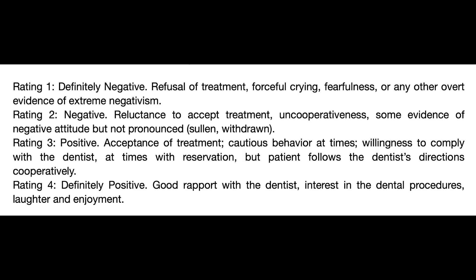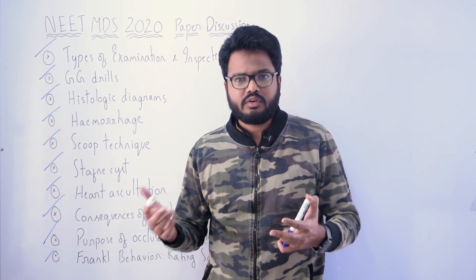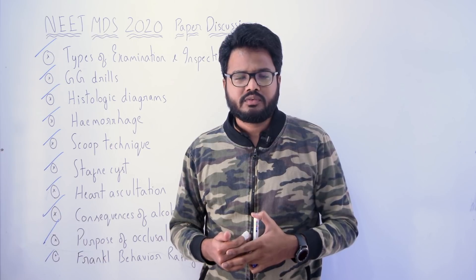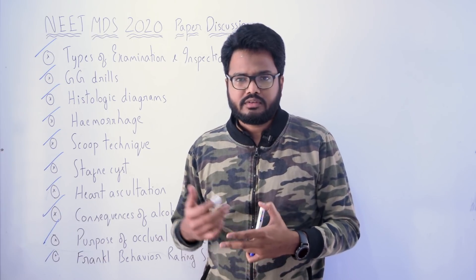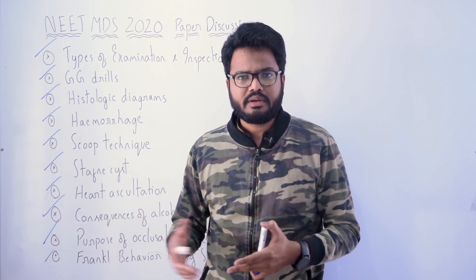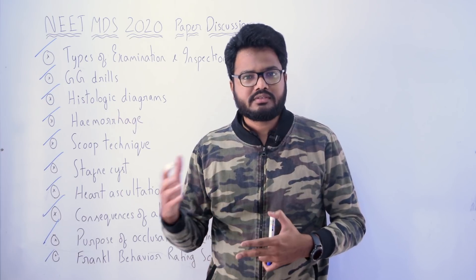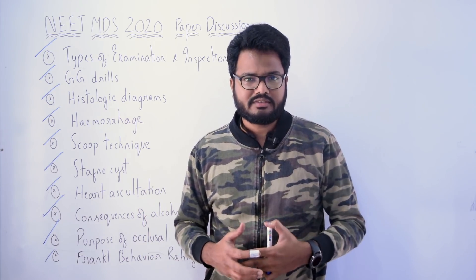Finally, the Frankl Behavior Rating Scale — used for classifying children's cooperative behavior. The scale divides observed behavior into four categories ranging from definitely positive to definitely negative, with ratings one through four. See what the specific question is and whether this information is useful to answer what is asked in the exam.